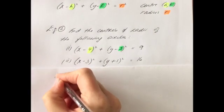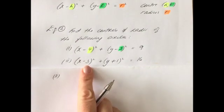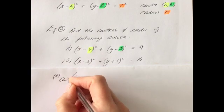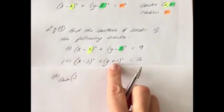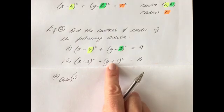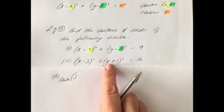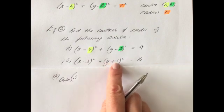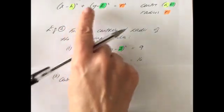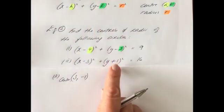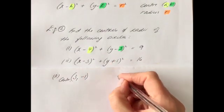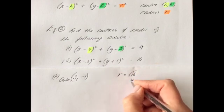In the next example, (x − 3)² + (y + 1)² = 16: the x-coordinate of the center is 3 from (x − 3). For the y-coordinate, there's a plus 1, which means it must have been y minus (−1), so the y-coordinate of the center is −1. The radius is the square root of 16, which is 4. So center is (3, −1) and radius is 4.